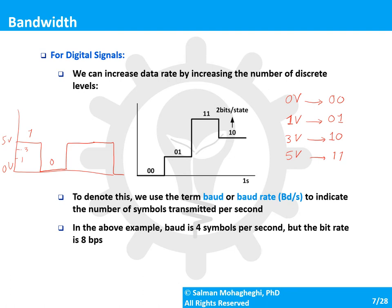To distinguish this from simple binary, we use the term baud or baud rate — the number of symbols transmitted per second. Each voltage level is a symbol, not just a bit. In this hypothetical example, we send four symbols per second (4 baud), but each symbol carries two bits, so the bit rate is eight bits per second.